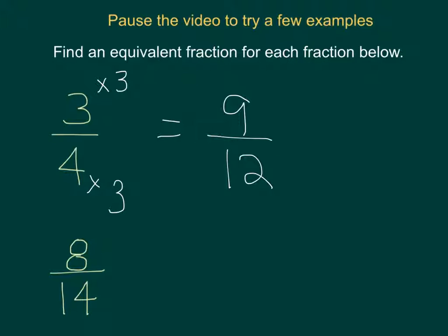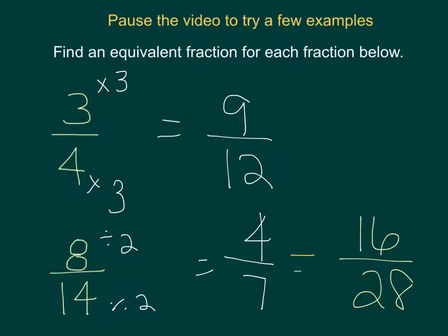For the next example, remember we said you could multiply or divide to get equivalent fractions. Let's divide both of these by 2, and you would get 4 over 7. You could also multiply by 2, and you could get 16 over 28. All of these are equivalent, and actually both of these fractions would be equivalent to each other, because you would be able to do something to 4 sevenths to make it 16 28ths.